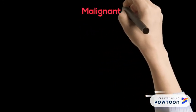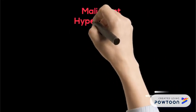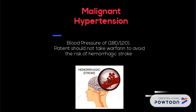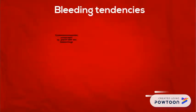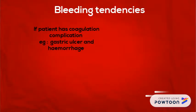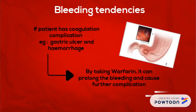Next is malignant hypertension, where the patient's blood pressure is 180/120, and thus this patient should not take warfarin. Regarding bleeding tendencies, if a patient has coagulation complications such as a gastric ulcer, then taking warfarin can prolong bleeding.